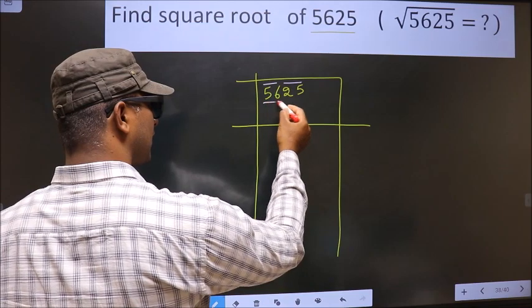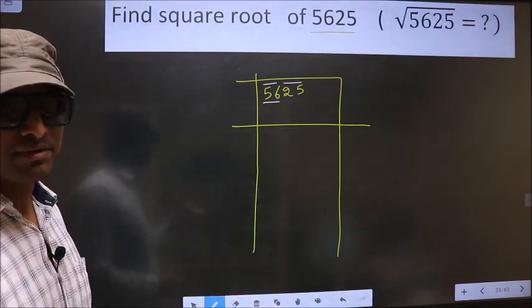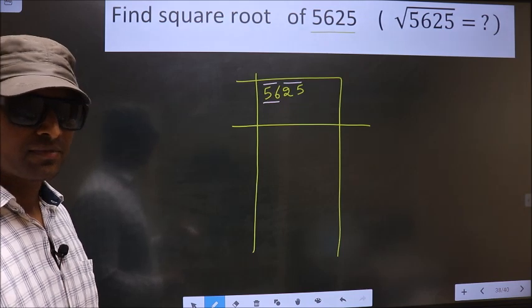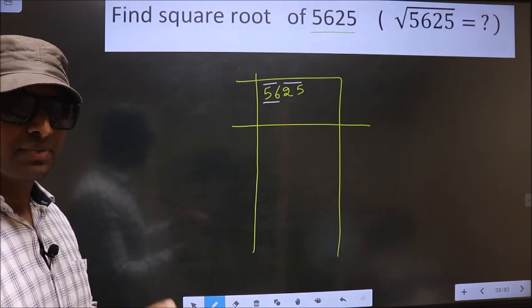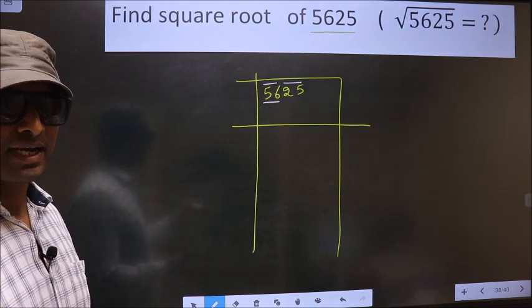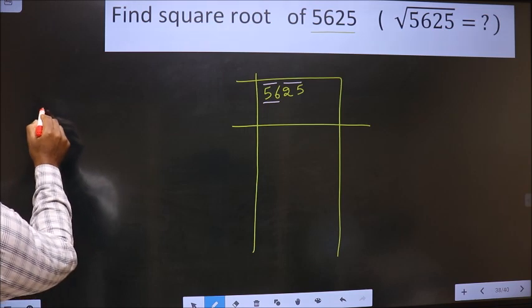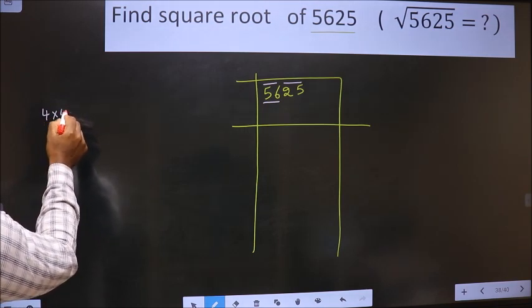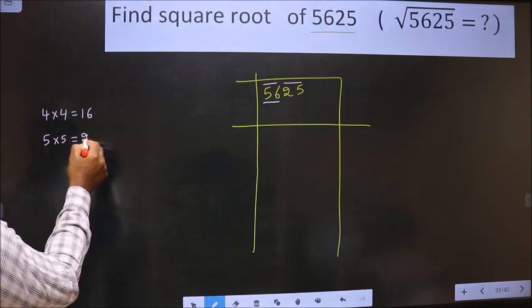Now, here we have 56. 56 is not a perfect square. So now we should check 56 lies between which two perfect square numbers. Perfect square numbers are these: that is 4 × 4 is 16, 5 × 5 is 25,